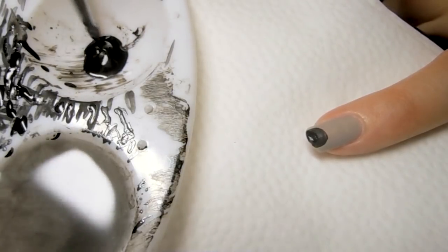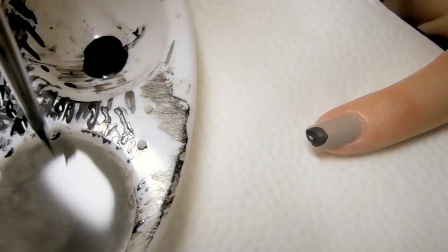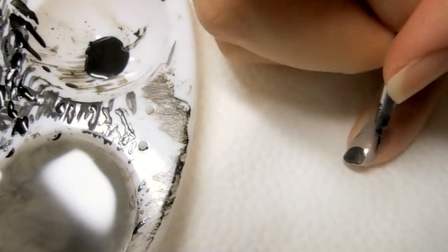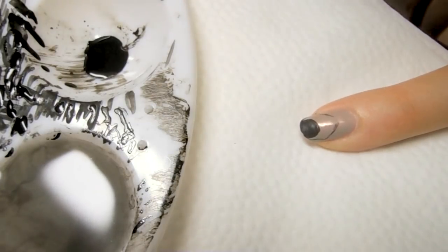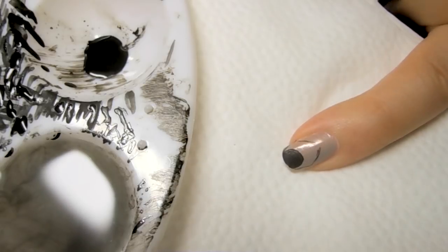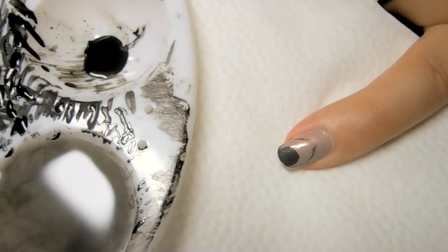When you're drawing the legs, you want to make sure you thin out the paint because you want your lines to be very thin. So now it doesn't look like anything, but once I put in more of the details, it will look a lot more like a spider or part of the spider.